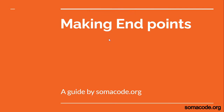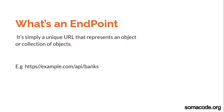Today we are going to talk about making endpoints. An endpoint is simply a unique URL that represents an object or collection of objects. Take an example of the following URL: HTTPS://example.com/api/banks.